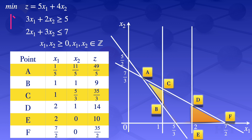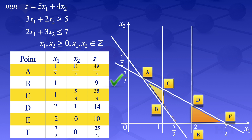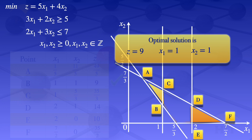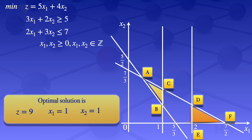Our problem is a minimization problem, so we look for the smallest value of z in the column. The smallest value is 9. This means the optimal solution is z equals 9, which occurs when x1 equals 1 and x2 equals 1. The values of x1 and x2 are integers as required by the constraint, so this is the solution of the integer programming problem.